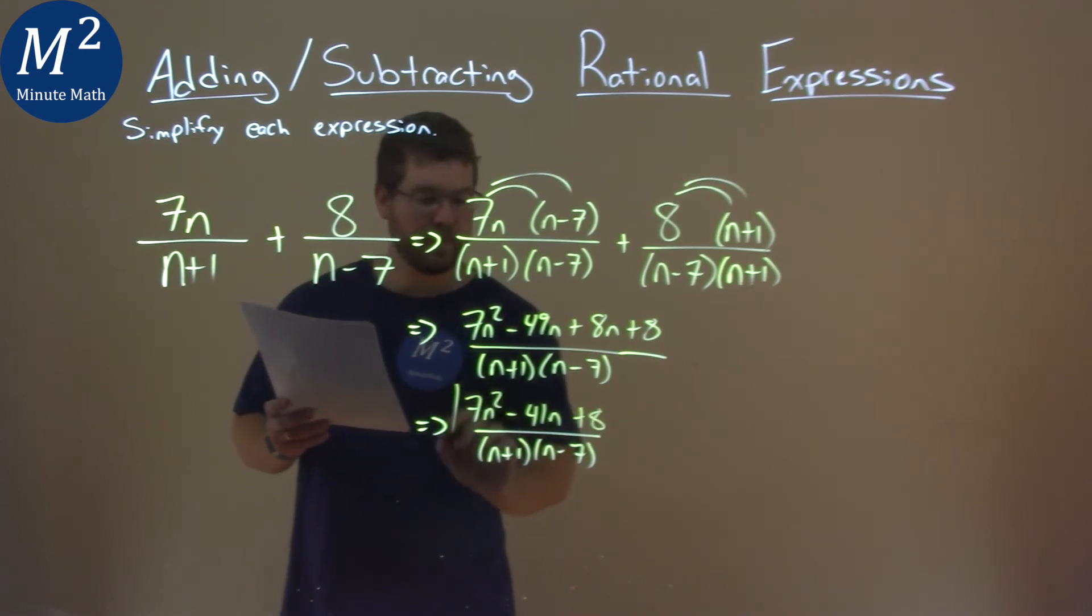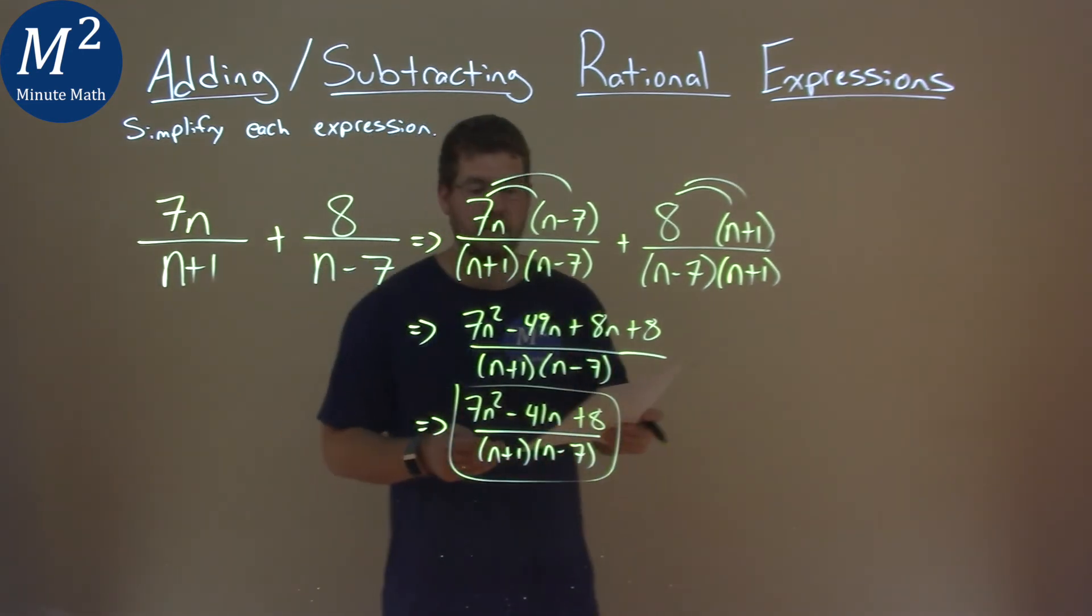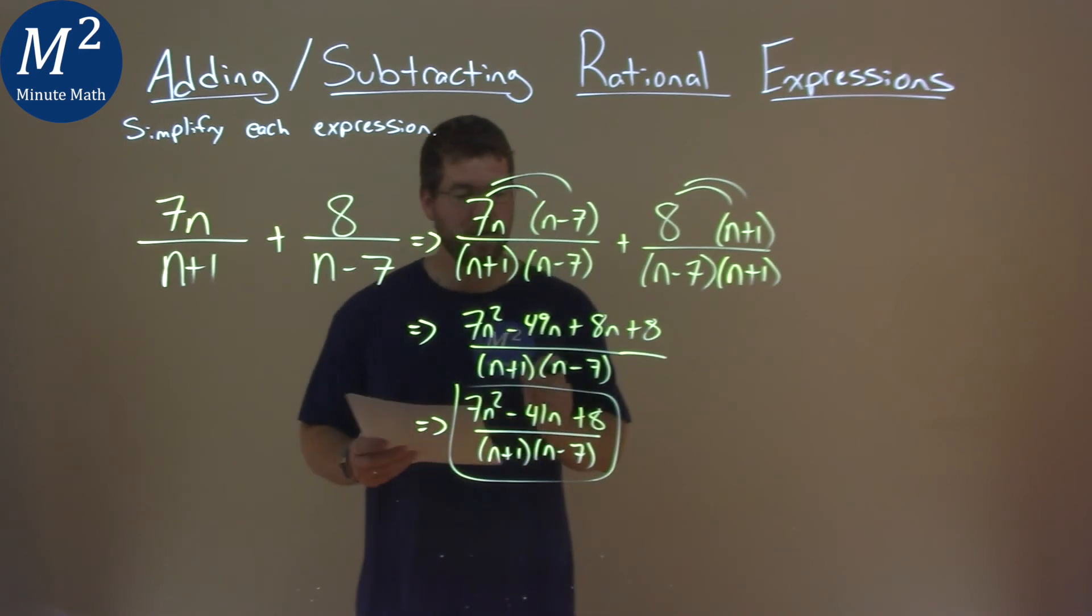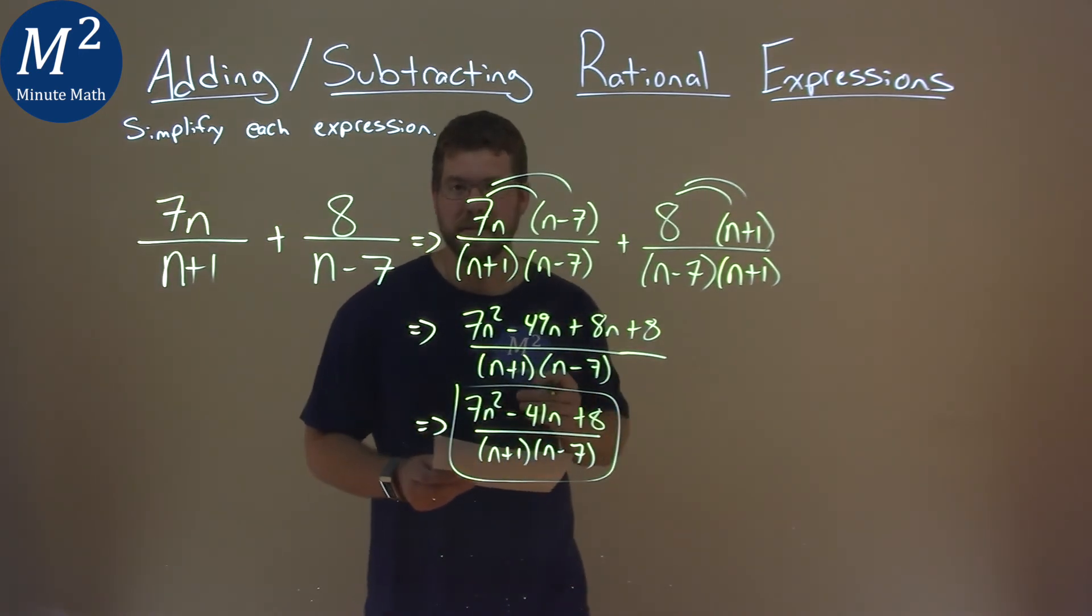And that's it. Our final answer here is 7n squared minus 41n plus 8 over n plus 1 times n minus 7.